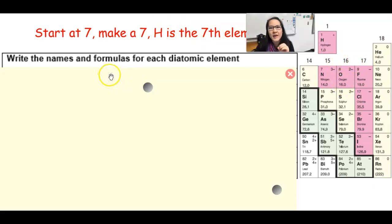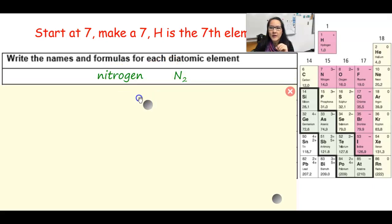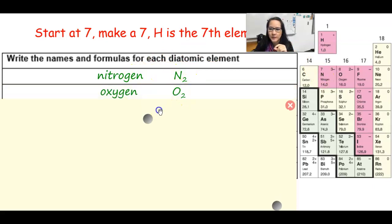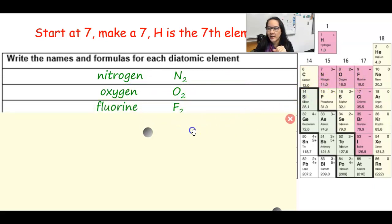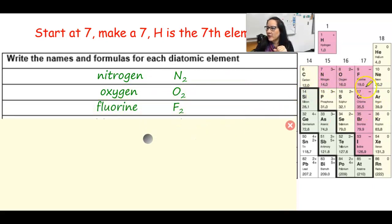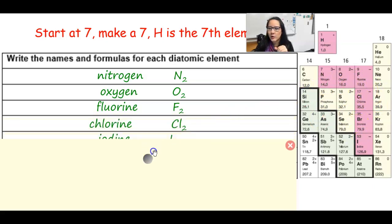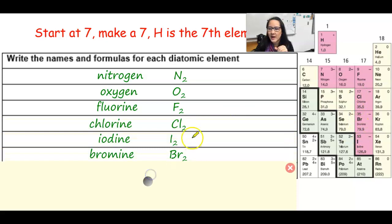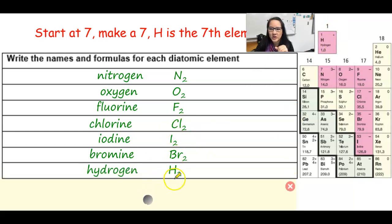Now write the names and formulas for each diatomic element. N is nitrogen, formula N2. Then O — oxygen is O2, followed by fluorine as F2. And then the rest of the halogens: Cl, Br, and I will be chlorine, bromine, and iodine — Cl2, Br2, and I2. And finally, hydrogen is H2.